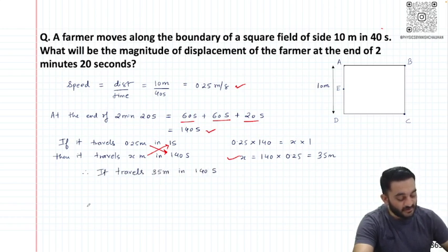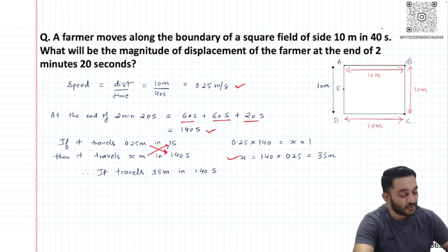He has traveled 35 meters in 140 seconds. That means A to B is 10 meters, B to C is 10 meters, C to D is 10 meters. The total travel till point D is 30 meters, and then he has traveled only 5 meters more, so he will be somewhere at point E.